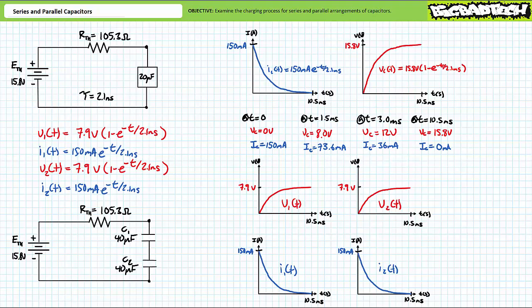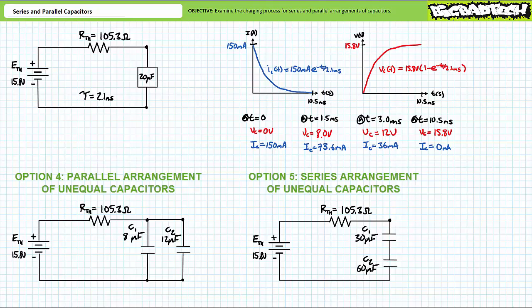Option four and option five are not so easy. Option four is a parallel arrangement of unequal capacitors and option five is a series arrangement of unequal capacitors. Let's use a more simplified setup to explore these two options one at a time, starting with option four: a parallel arrangement of unequal capacitors. This is where you need to pay attention because it's about to get weird.